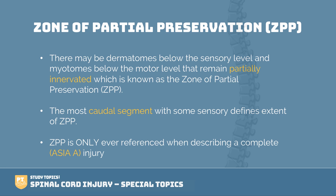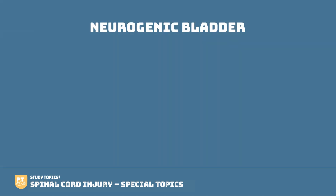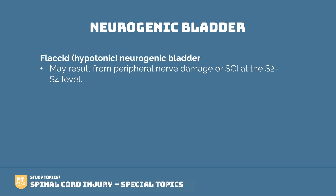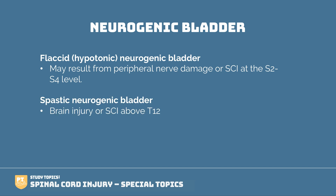Now let's talk about the neurogenic bladder. With the neurogenic bladder we have two different types. We have the flaccid or hypotonic bladder, which results from a peripheral nerve injury or a spinal cord injury at the level of S2–S4. We could also have a spastic neurogenic bladder, and this happens with a brain injury or spinal cord injury above T12.